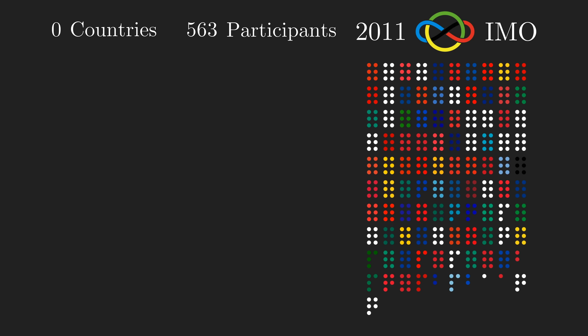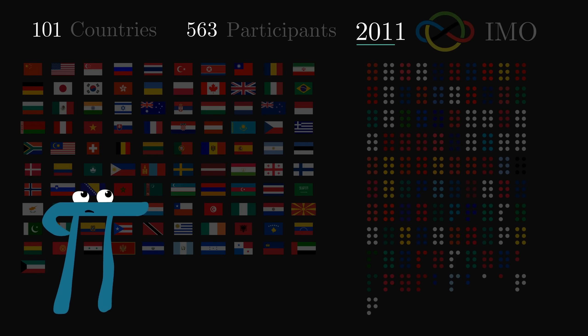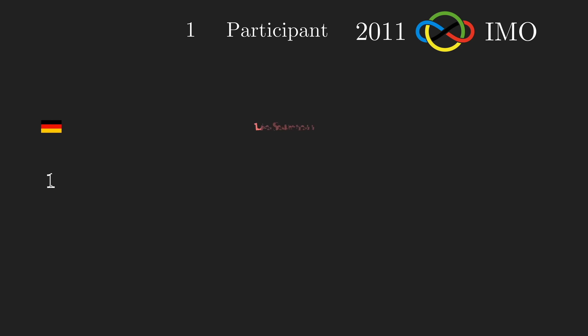Of interest to you and me today is the one from 2011, with 563 total participants representing 101 countries. I know what you're thinking, and the answer is yes, those do all happen to be prime numbers. But that's not why this test was interesting. Out of all these prime problem solvers, only one of them, Lisa Sauermann from Germany, got a perfect score.